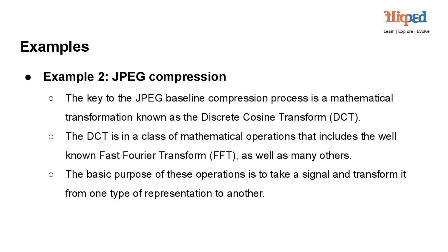Example 2: JPEG compression. JPEG compression relies on the discrete cosine transform (DCT) to achieve its compression process. The DCT is a mathematical transformation that converts an image or signal from its spatial representation into a frequency domain representation. It is part of a group of mathematical operations that includes the well-known Fast Fourier Transform (FFT) and others. The primary goal of the DCT and similar operations is to transform a signal or image from one type of representation to another, enabling efficient compression by removing redundant or less important information in the frequency domain.